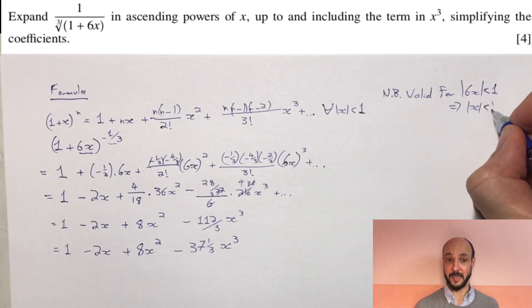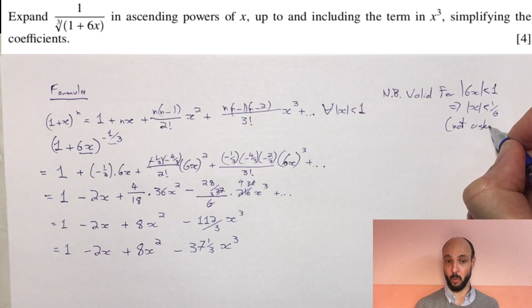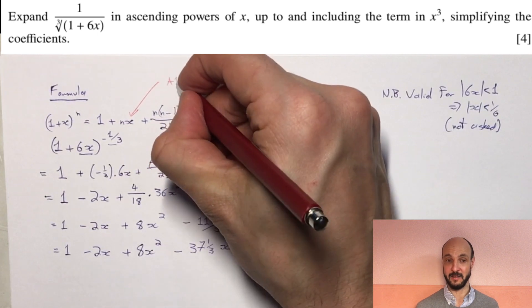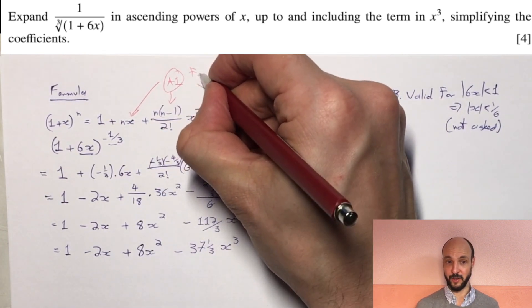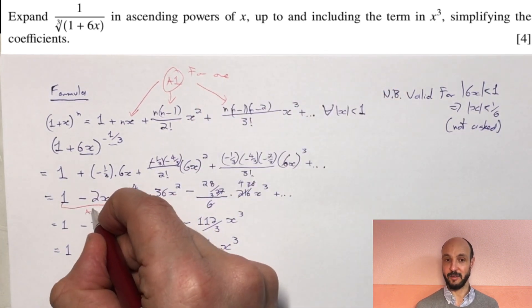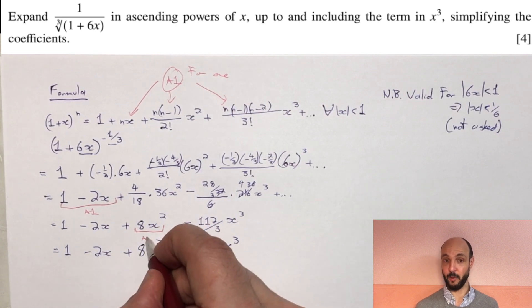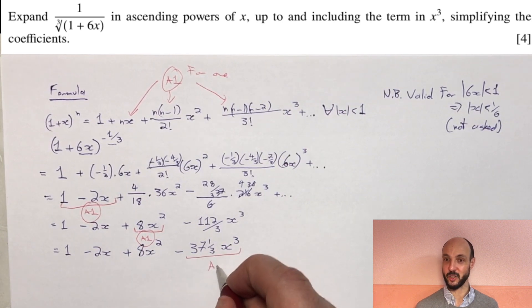So let's see where the marks were assigned. We've got one accuracy mark as long as we got one of the terms in the expansion other than 1 and without having to simplify it as long as it was accurate. We've got a second accuracy mark if we got the first two terms, 1 minus 2x, accurate. Another accuracy mark if we got the next term, 8x squared. And our fourth and final accuracy mark if we got the fourth term, minus 112 over 3x cubed.